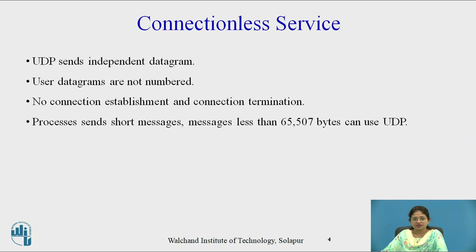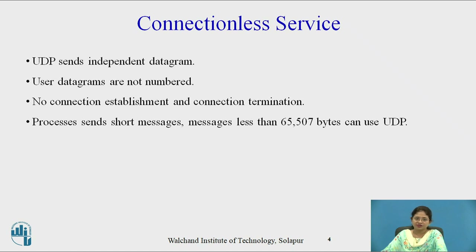The next service is connectionless service. UDP sends independent datagrams, meaning there is no relation between individual user datagrams even though they are coming from the same source and going to the same destination. User datagrams are not numbered — sequence numbers are not provided by UDP. There is no connection establishment and connection termination, which is why it is known as connectionless service. UDP processes send short messages less than 65,507 bytes. The total UDP user datagram size is 65,535, but minus the 8-byte UDP header and the 20-byte IP header, it becomes 65,507.